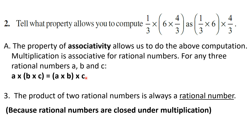Third and last question: fill in the blank. The product of 2 rational numbers is always a — the answer is rational number. No matter whichever 2 rational numbers you take, when you multiply them the result is always a rational number. Mathematically, we say this is because rational numbers are closed under multiplication. Multiplication of 2 rational numbers always gives you a new rational number.